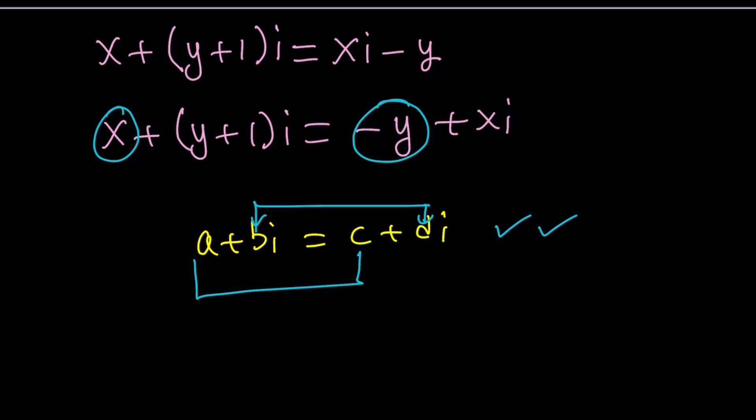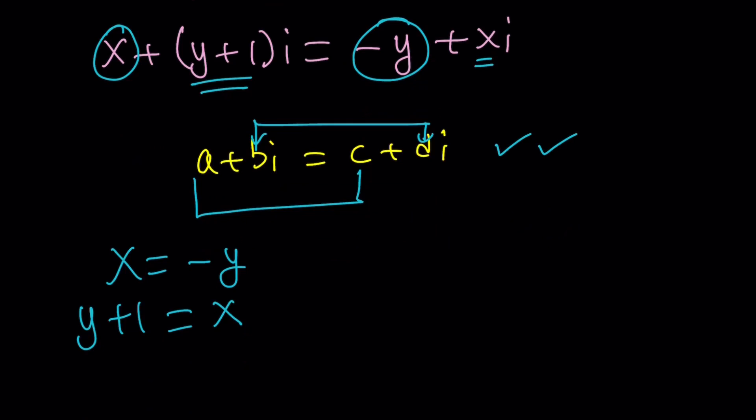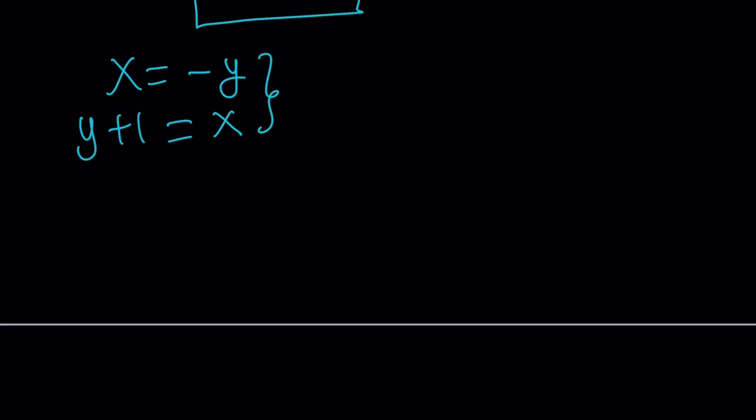X equals negative Y. And Y plus 1 equals X. Remember, the imaginary part is the number in front of I. The coefficient of I does not include I. So now we've got a system which is very easy to solve because both of these equations are equal to X. So we can basically set these equal to each other. So Y plus 1 equals negative Y. Add Y to both sides and subtract 1. You get this. And then divide by 2. And you get the Y value. Y is equal to negative 1 half. Great.